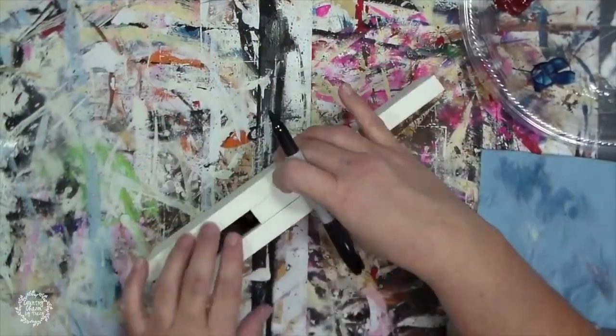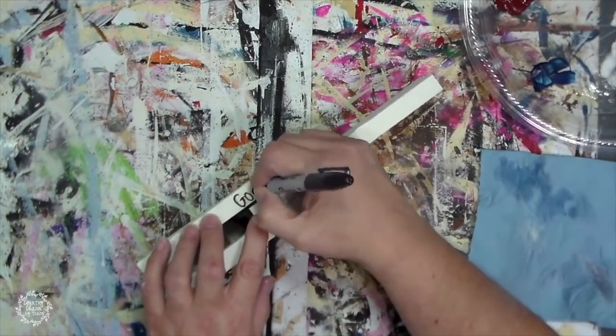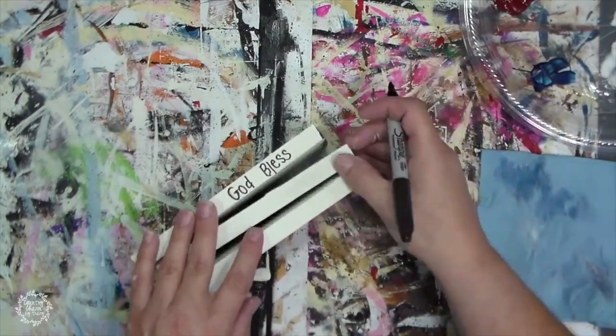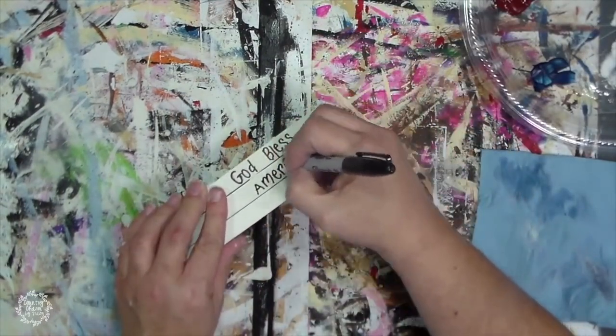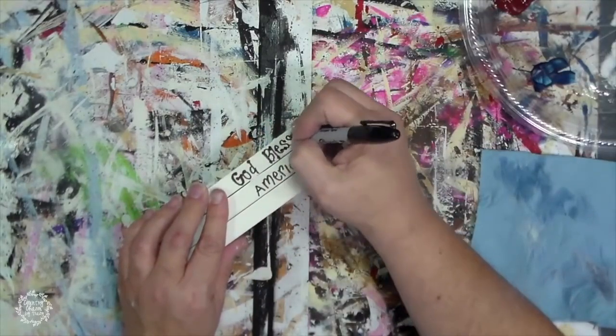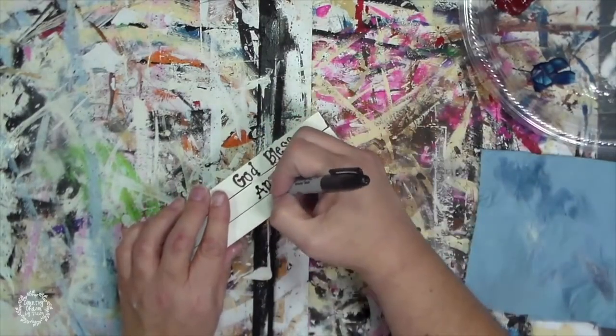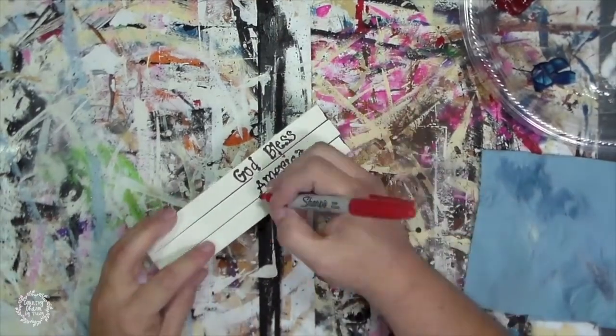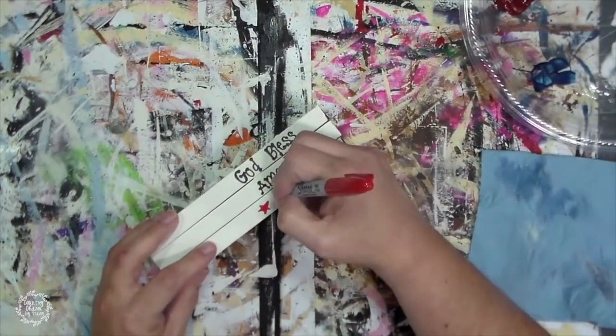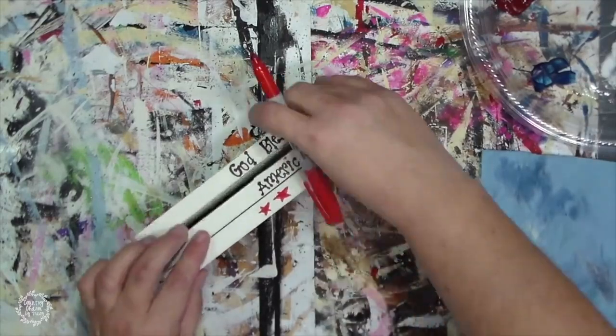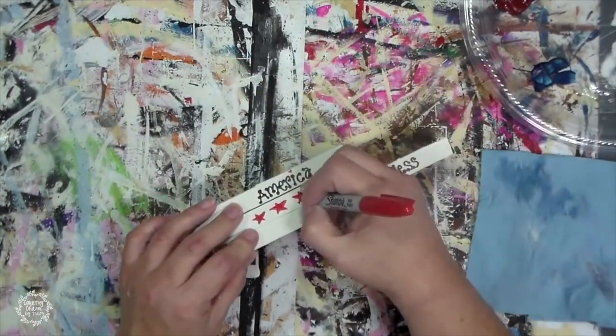I'm using my fine black Sharpie marker and I'm going to write God Bless on one of the spines of the books and America on the middle book and then on the bottom book I'm just going to draw freehand some stars with a red Sharpie marker.